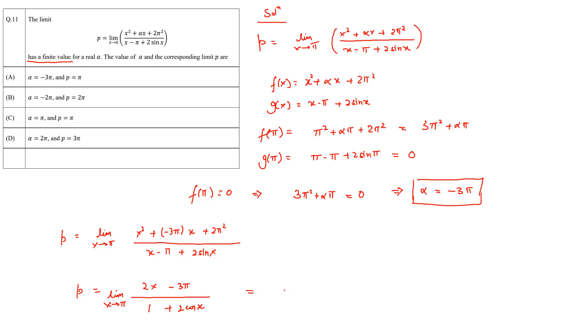Now we can substitute the limit and then we'll find that p equals (2 pi minus 3 pi) over (1 plus 2 cos pi). Cos of pi is equal to minus 1, so this becomes minus pi over (1 minus 2) which is minus 1, and the final answer is pi. So p equals pi.